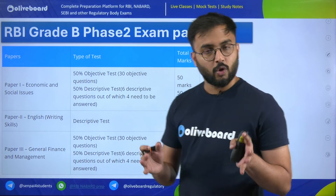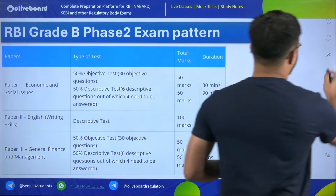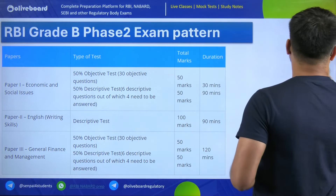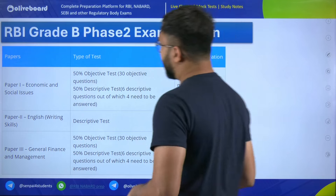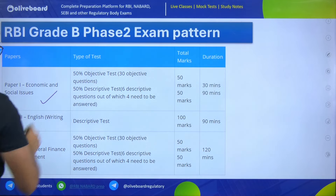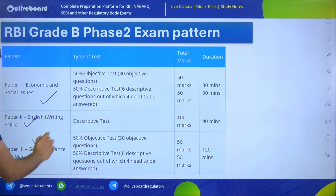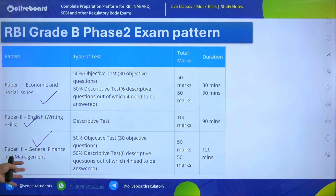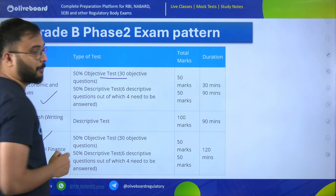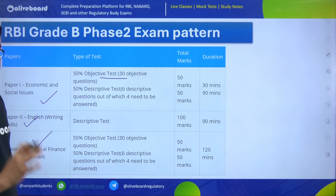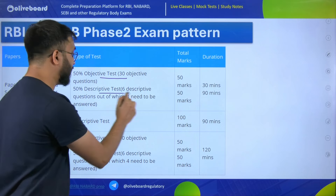First, we all know what the exam pattern is. Overall, three papers are there. Paper 1 is Economic and Social Issues for 100 marks. Paper 2 is English descriptive for 100 marks. Paper 3 is general finance and management, which we have already discussed — how to score 75 plus marks in that. When talking about ESI, 50 marks out of 100 are from multiple choice questions and the remaining 50 are from descriptive questions.